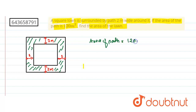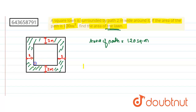The area of the path is 120 square meters. We have to find the area of the lawn. Suppose the side of the lawn is x, because it is a square lawn.